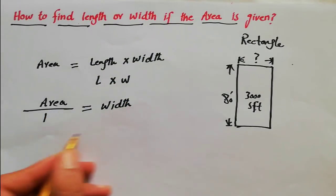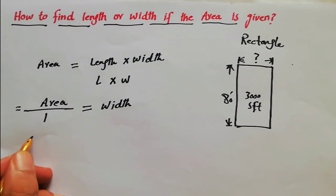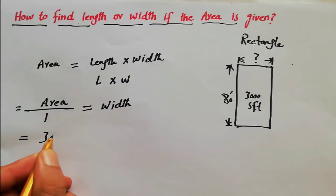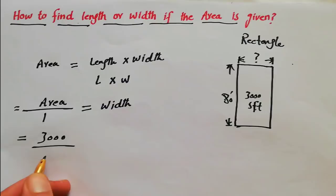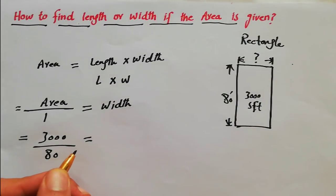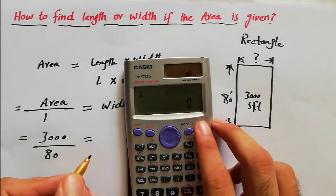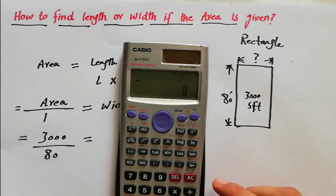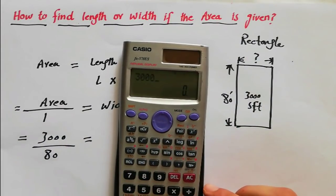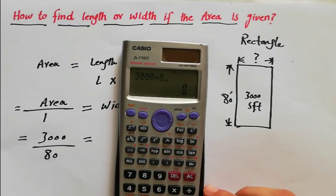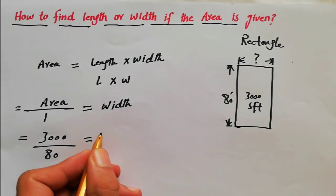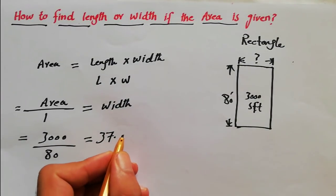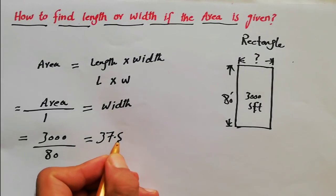We have total area here, 3000 square feet, divided by 80 feet. What will be the width? Use calculator for calculation: 3000 divided by 80, so 37.5 feet. It will come 37.5 feet. So this side is 37.5 feet.